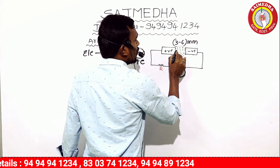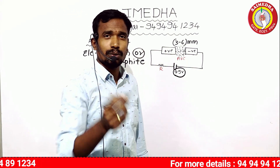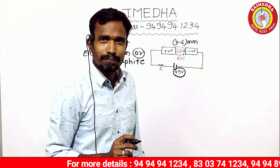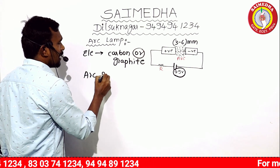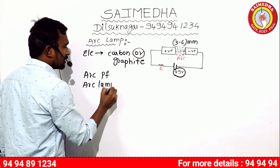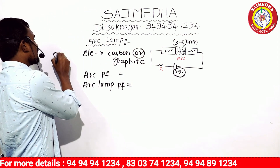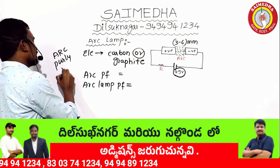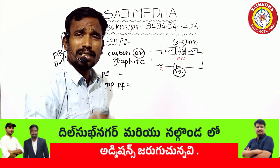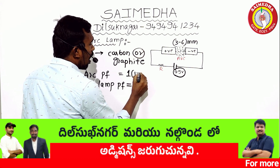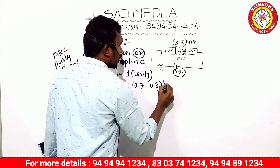In this gap area, the lamp produces light and the lamp glows. The arc lamp power factor — the lamp is purely resistive in nature, pure resistance. Pure resistance has a power factor of unity. But the arc lamp power factor is 0.7 to 0.8 lagging.